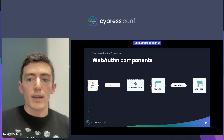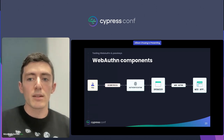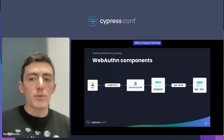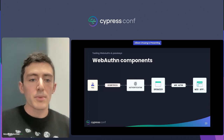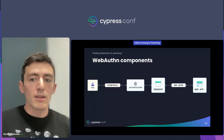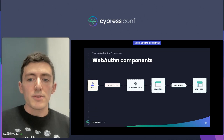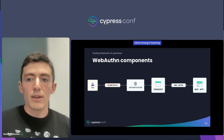These roaming authenticators can communicate over USB, Bluetooth, or even NFC. People can use YubiKeys, phones, laptops, or other devices to log in. And these authenticators can all have different levels of interaction.